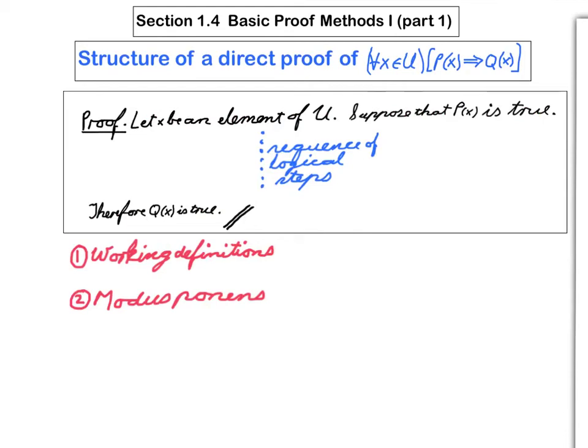So, for example, say one of the lines of the proof is, suppose that set E is compact. Well, you're supposed to know what it means to say that a set is compact. You're supposed to have memorized what the working definition of that is. And so if you know that definition, on the next line of the proof, you can fill in what it means to say that set E is compact.